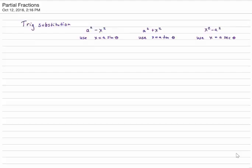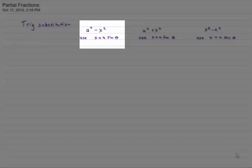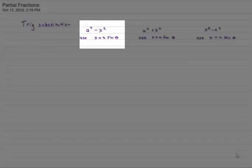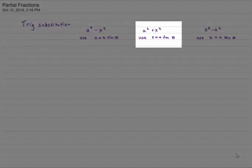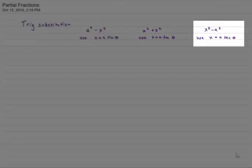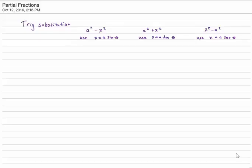We were able to use trig substitutions in these cases where our integrals contained a squared minus x squared, a squared plus x squared, or x squared minus a squared. But say instead I had something like this. Well, that is certainly a quadratic in the denominator, but it doesn't match any of the forms that I can use a trig substitution for. So what to do?